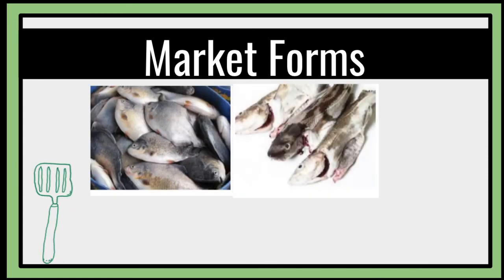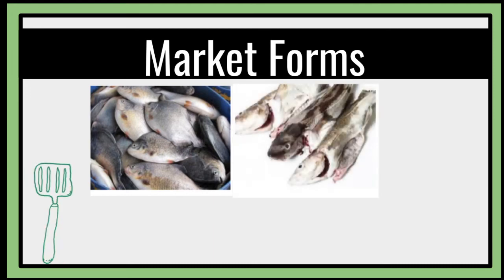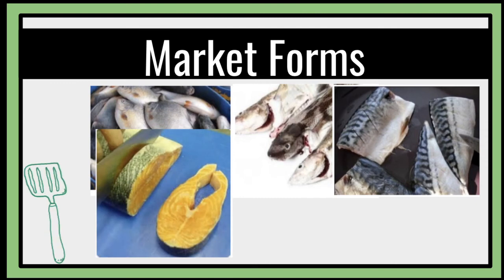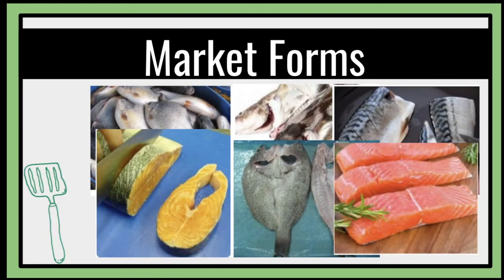Have you remembered this? Can you tell me what are the different market forms of fish? Let's have the first picture — I'll be giving you three seconds to answer. That is a whole fish. How about this one? That is a drawn fish. This one? That kind of fish is a dressed fish. And this one? It is a steak. This one? Butterfly. And the last one, we have the sticks.